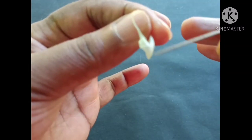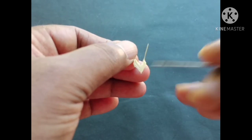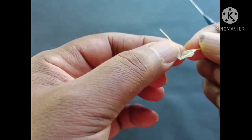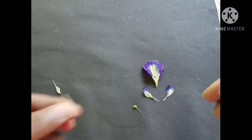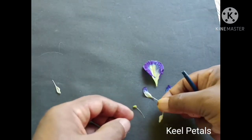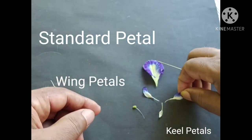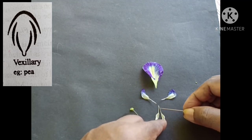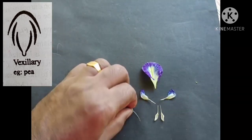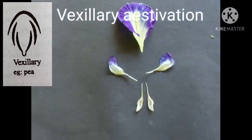The keel petals are united at the anterior part and shaped like a keel. They are united at the base and arranged as keel petals. Then there are the wing petals and then the standard petal. The standard petal is the biggest petal, then the wing petals, and then the keel petals. This arrangement — standard petal covering wing petals, wing petals covering keel petals — is Vexillary Estivation, clearly seen in the Clitoria flower.